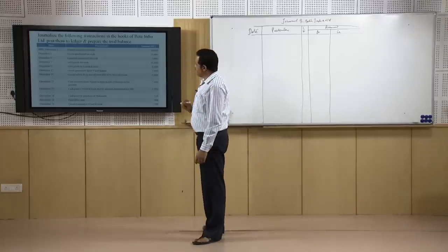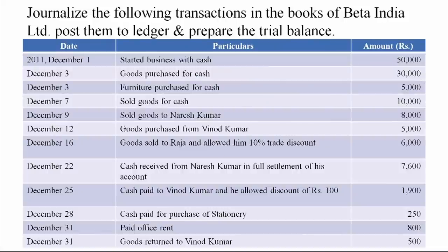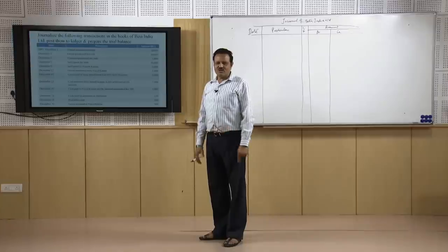Now our job is to record all these transactions. Look at these transactions: the first transaction is December 1st, 2011 — started business with cash. Then goods purchased for cash, furniture purchased for cash, sold goods for cash, sold goods to Naresh Kumar, purchased goods from Binod Kumar, sold goods to Raja and allowed him 10 percent trade discount. Similarly, cash received from Naresh Kumar in full settlement of his account, cash paid to Binod Kumar and he allowed discount of 100 rupees, cash paid for stationery, paid office rent, goods returned to Binod Kumar. These are the transactions to be recorded in the journal.